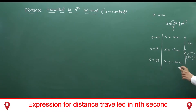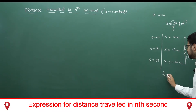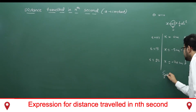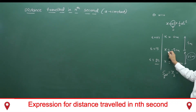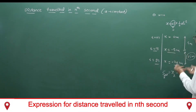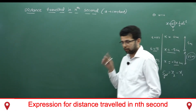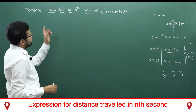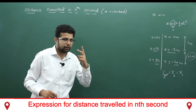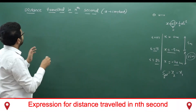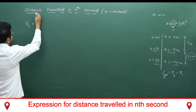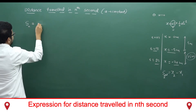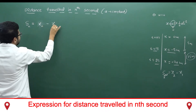How do we get this? The distance travelled in the 2nd second equals the distance travelled in 2 seconds minus the distance travelled in 1 second: 20 - 5 = 15 meters. We neglect the minus sign since we are speaking about distance only. Generally, distance travelled in the nth second equals distance travelled in n seconds minus distance travelled in (n-1) seconds.